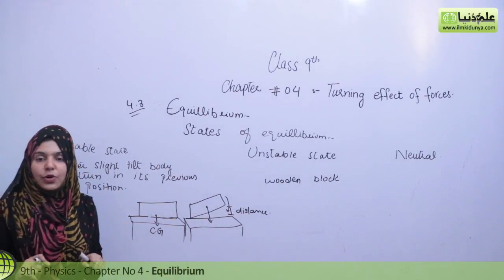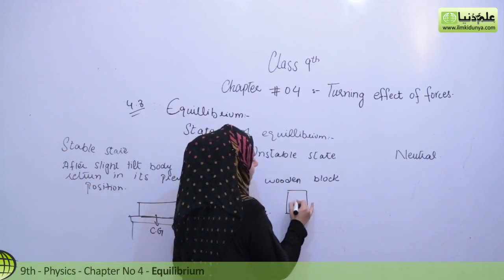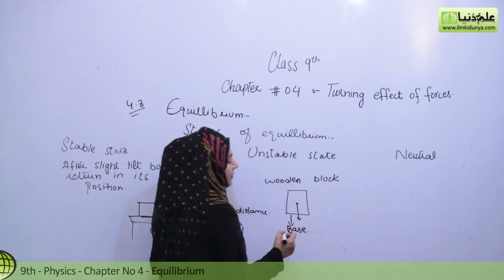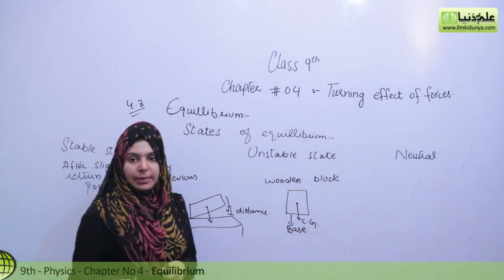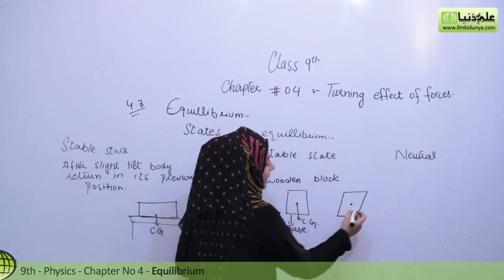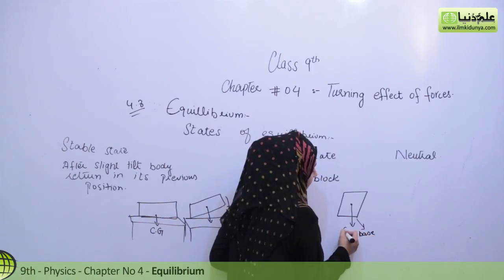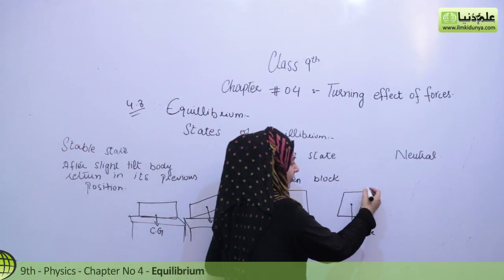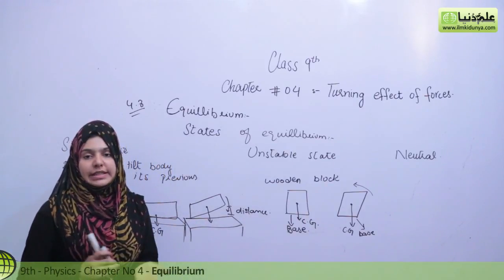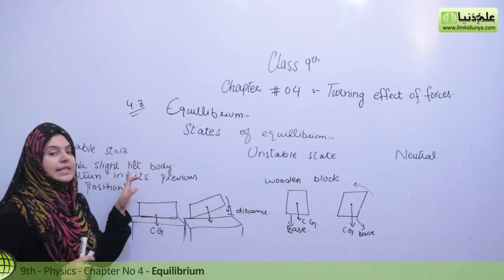The first condition is that the center of gravity should be at the lowest point, and the second is that the center of gravity should pass through the base. With the wooden block, the center of gravity passes through the base and it is in equilibrium. When slightly tilted, the center of gravity moves down but still passes through the base, so when released, the body returns to its previous position. Bodies that return to their previous position after a slight tilt are said to be in a stable state of equilibrium.